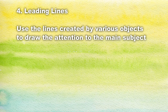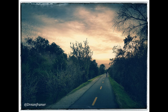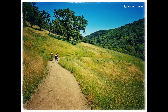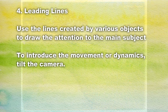Leading lines — let's see what that's about. We can use various objects in the picture to draw the attention of the eye to the main subject. For example, this road leads our eye to the couple walking on it. Or another picture of people walking on a road, where the road again leads our eye to them. In both cases, converging lines also create a sense of perspective. However, if we want to introduce movement or dynamics to the picture, it often helps to tilt your camera a little bit, giving a strong sense of movement or dynamic.